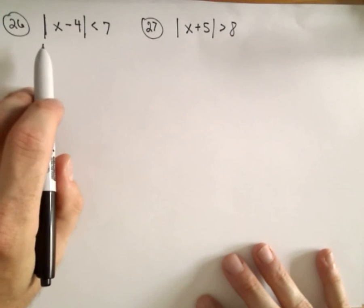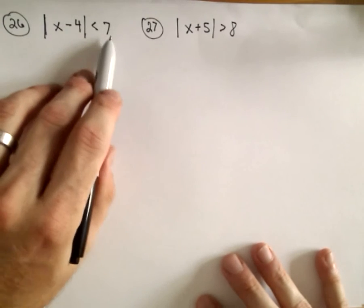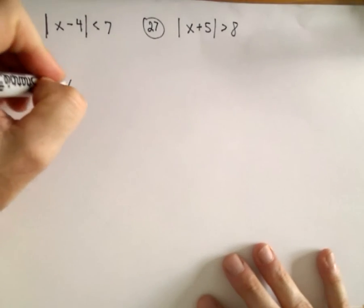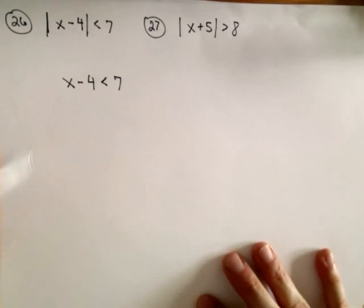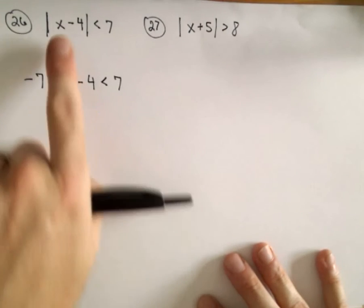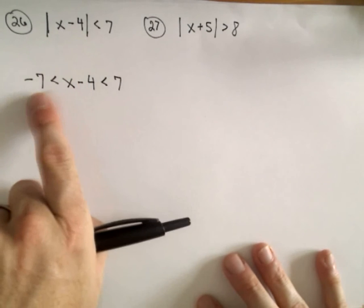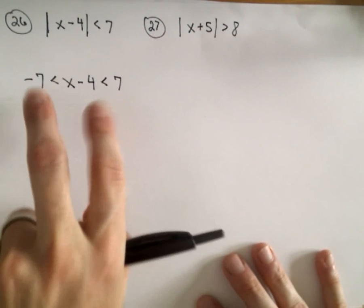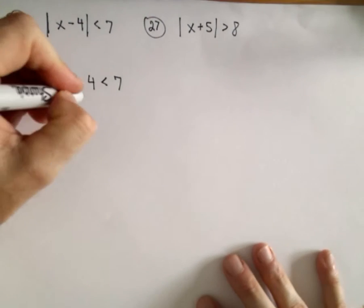To solve an absolute value inequality of the form when you have less than some number, some positive number, all you do is just make a compound inequality. So we've got x minus 4 less than 7, but we also make that greater than negative 7. If you can figure out what values make the absolute value between negative 7 and positive 7, well, the absolute value of any number between negative 7 and positive 7 will be less than 7. So this is easy enough.